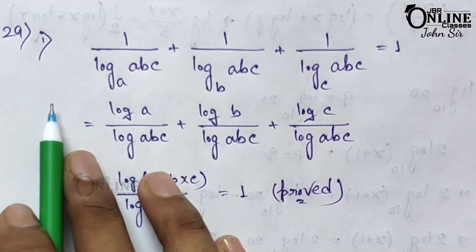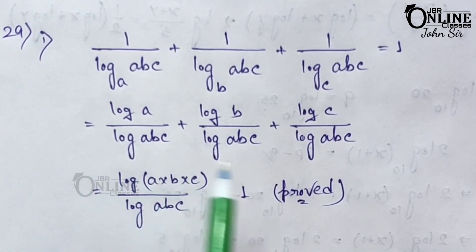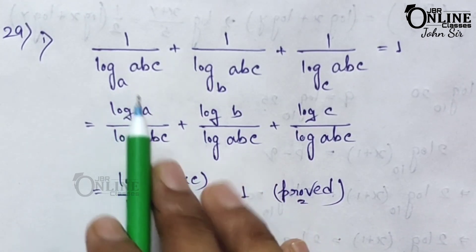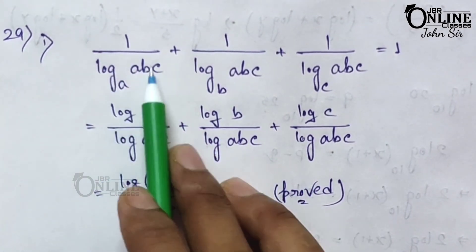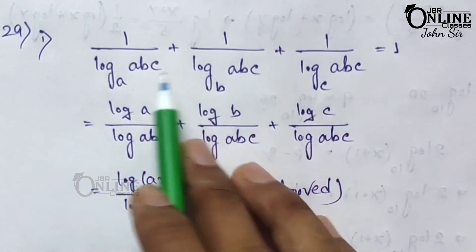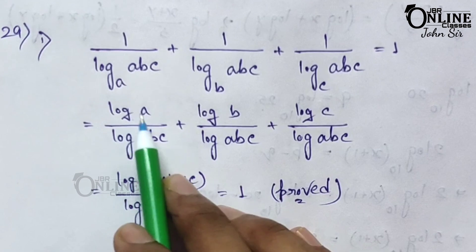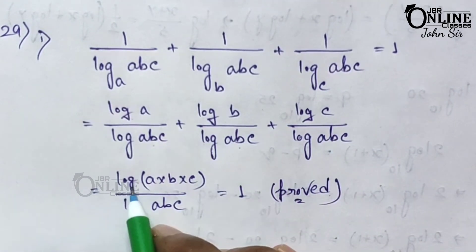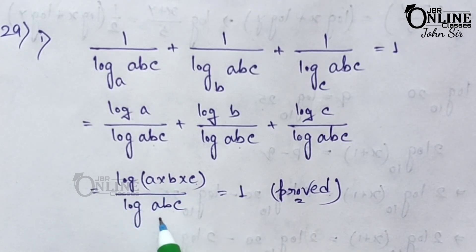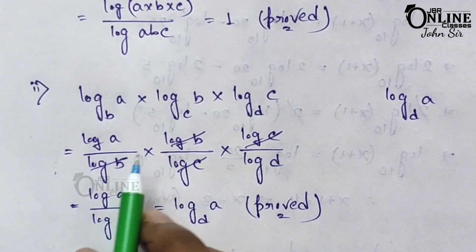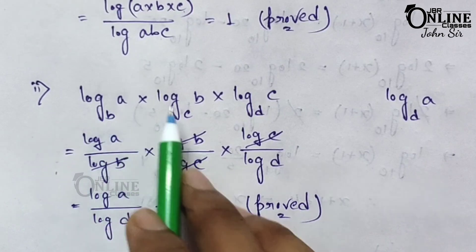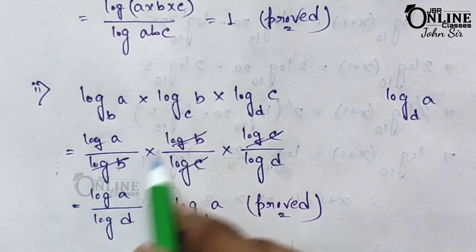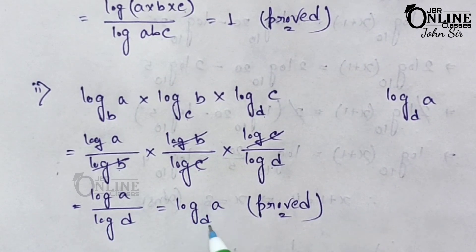Sum number 29.1: prove that 1/log_a(abc) + 1/log_b(abc) + 1/log_c(abc) = 1. Each term becomes log a / log(abc), log b / log(abc), log c / log(abc). Adding: (log a + log b + log c) / log(abc) = log(abc)/log(abc) = 1. Hence proved. Sum 29.2: log_ab + log_bc + log_cd simplifies using log b / log c cancellation to log a / log d = log_d(a). Hence proved.